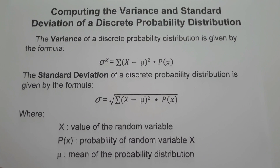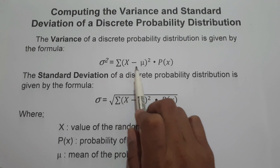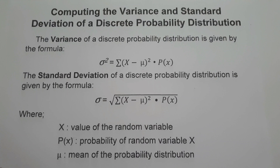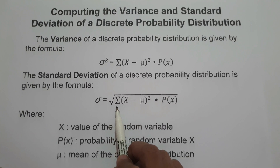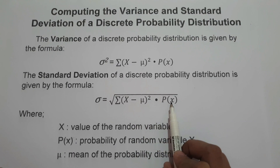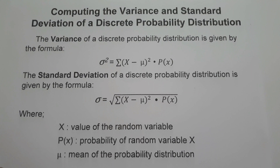In this video, we are going to talk about how to compute for the variance and standard deviation of a discrete probability distribution. The variance is denoted by the formula: summation of (x minus mean) squared multiplied by the probability of the random variable x. The standard deviation is the square root of that same summation. These are the formulas we need to remember.